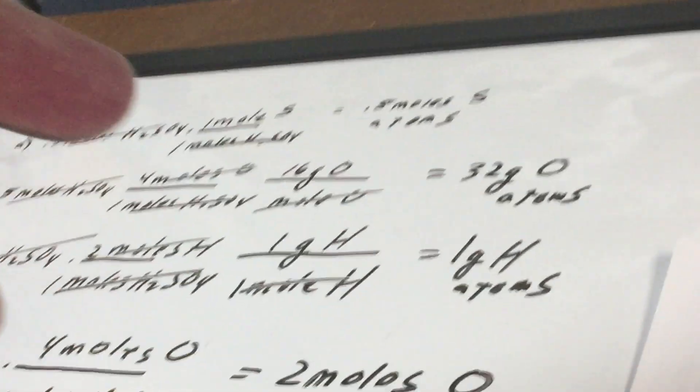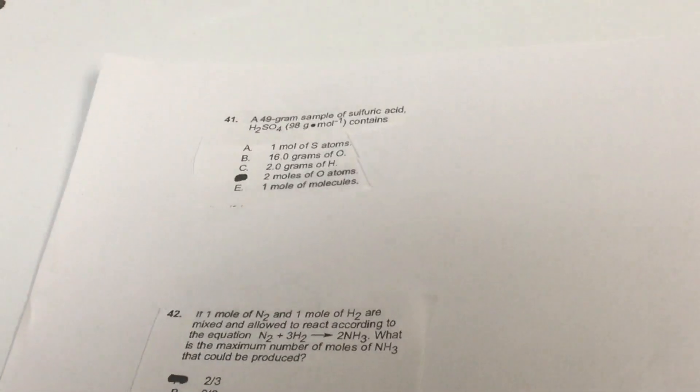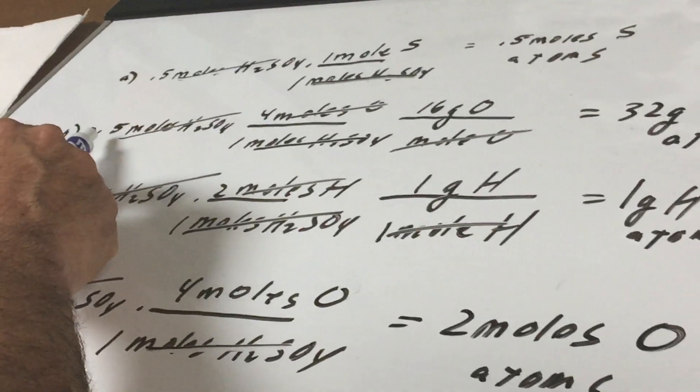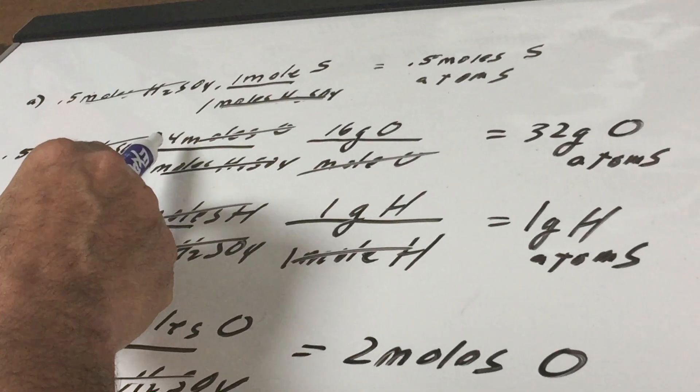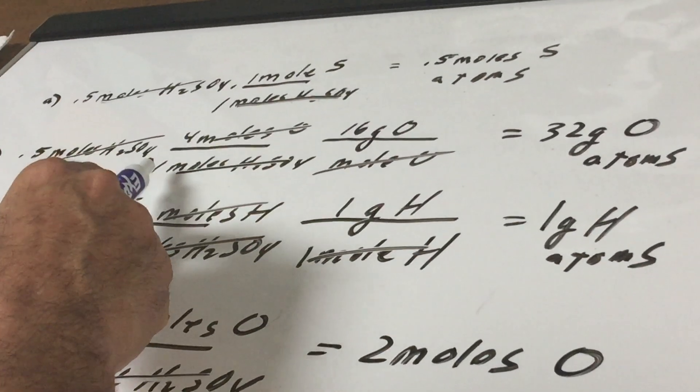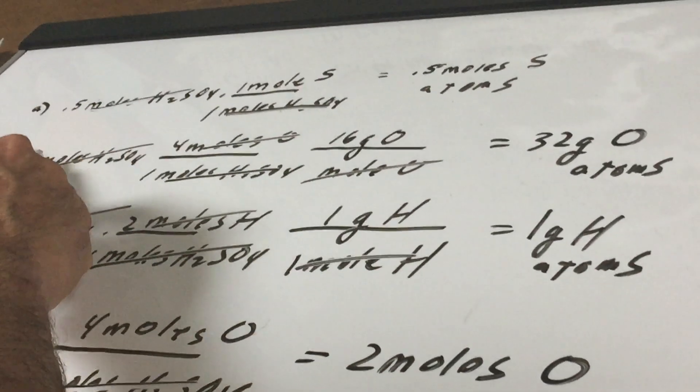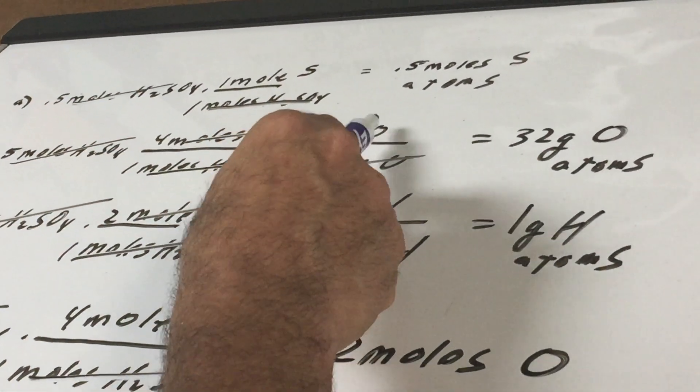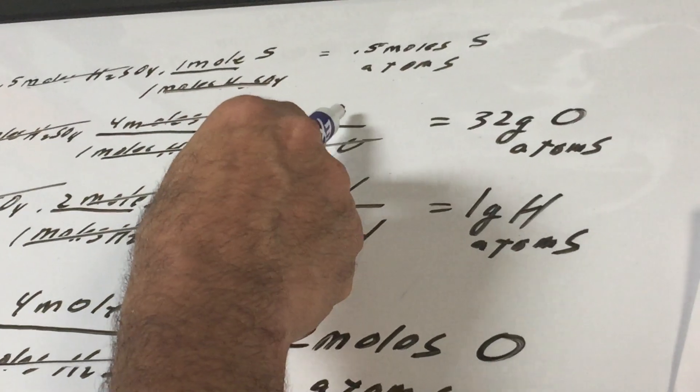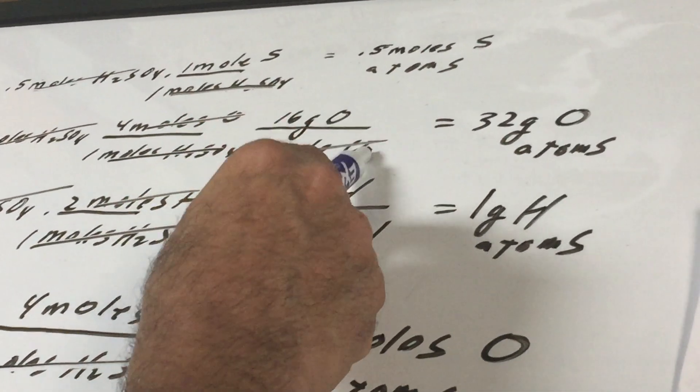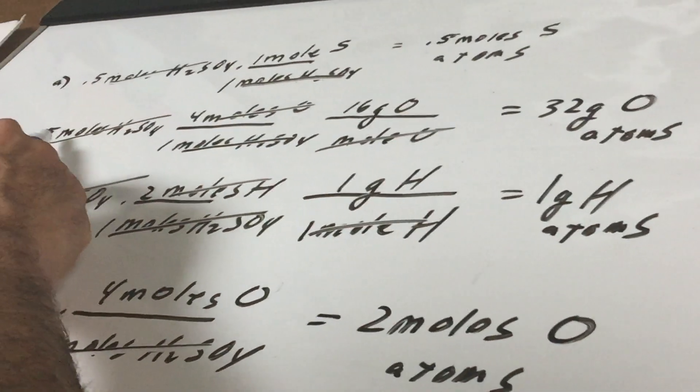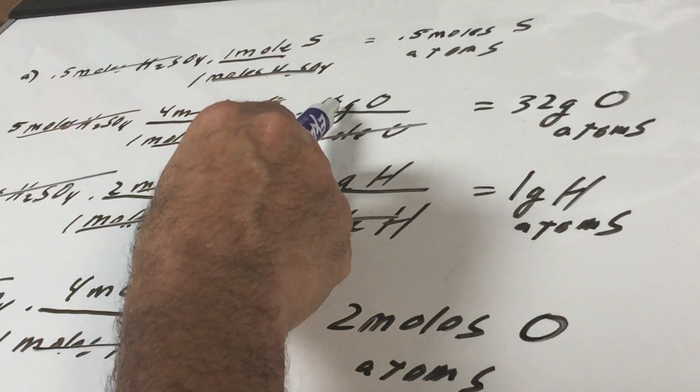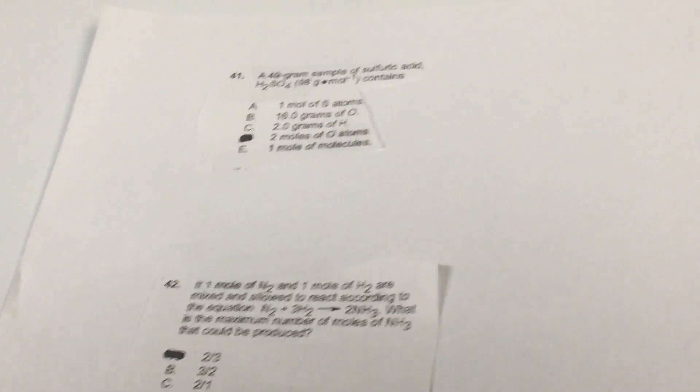How about B? There's 16 grams of O atoms. Well 0.5 moles of H2SO4. Notice the conversion factor. There's four moles of oxygen in one mole of the H2SO4. That cancels. And then there's 16 grams of O atoms in a mole of O atoms. Moles cancel out. And 0.5 times 16 is 8. 8 times 4 is 32 grams. Not 16 grams. So B is out.